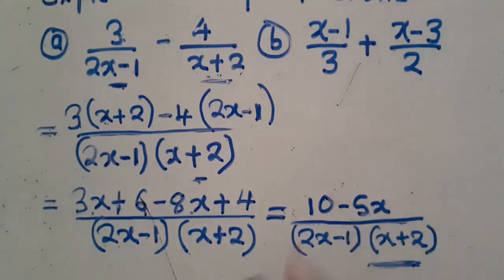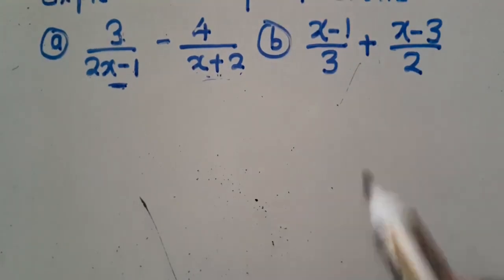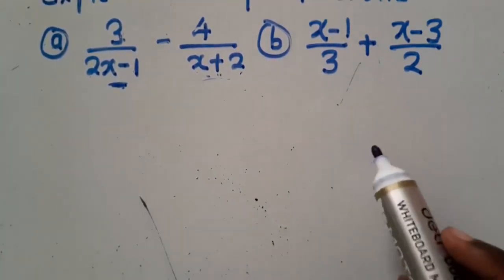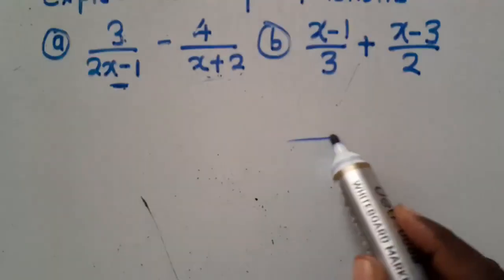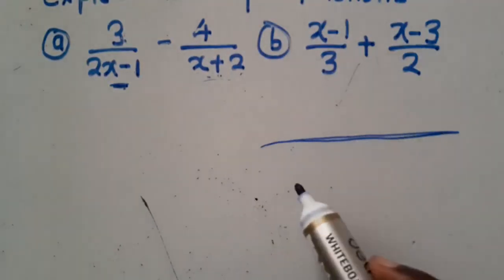So let us now look at that one. We've got this second one. Now you find the lowest common denominator. What is the lowest common denominator there? This is 3 and 2.